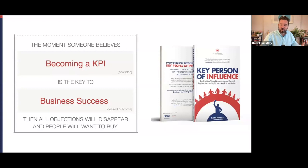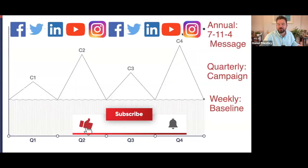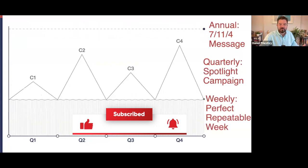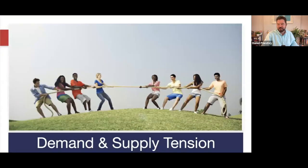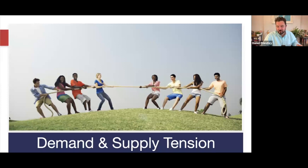You're out there talking about these big ideas — not talking about your products, not talking about what you do or your pricing. You're simply out there adding value around some central ideas. And those are your three campaigns: the big message, the quarterly spotlight, and the weekly perfect repeatable week. If you do those three things, you'll end up with massive demand and supply tension, a huge amount of people who want to work with you. You can pick and choose your clients, raise your prices, have more fun, take time off because you've got a waiting list. It's a much more fun game to play.